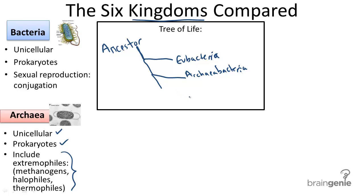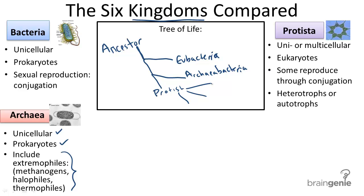Finally, the last four kingdoms to evolve are all eukaryotic organisms. They may have been thought to evolve from the protista kingdom, which are uni or multicellular organisms. They're eukaryotic. Some reproduce through binary fission or conjugation, and they can be made of heterotrophs or autotrophs.